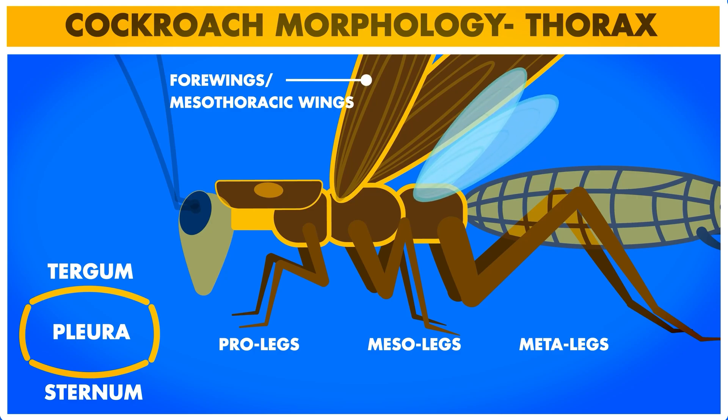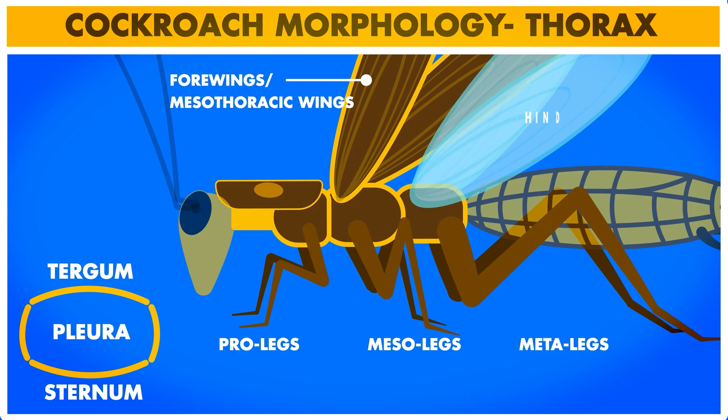The second pair of wings called hind wings arises from the metathorax, hence also called metathoracic wings. These wings are thin, transparent, delicate, and broad as compared to the forewings, and are used for flight.